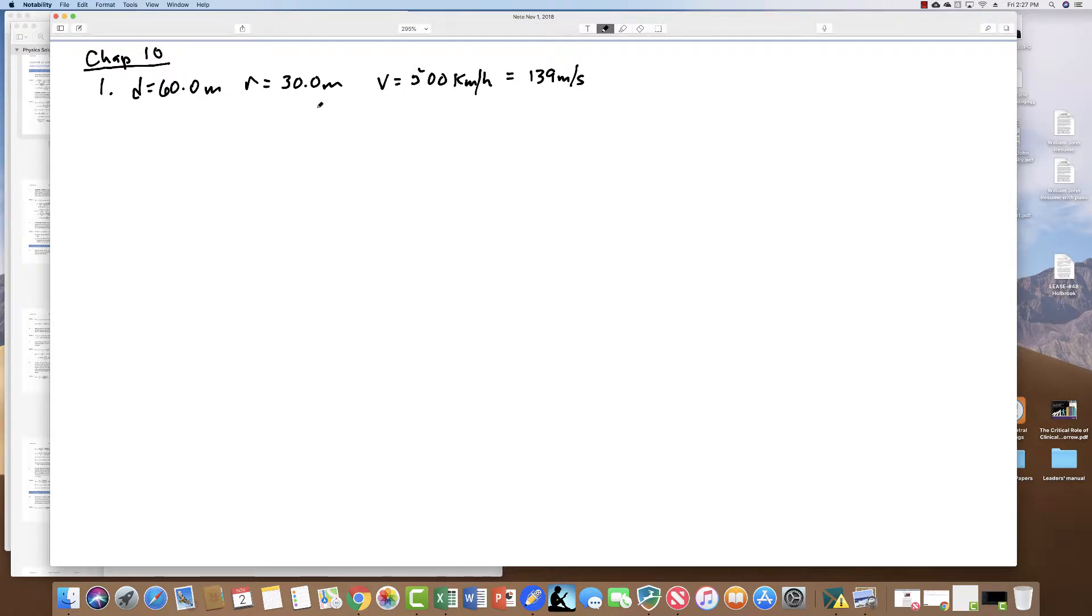That's the linear or tangential velocity. The angular velocity equals the tangential or linear velocity divided by the radius. So this is 139 meters per second divided by 30 meters, and we end up with an angular velocity of 4.63 radians per second. If we take that number and multiply by 2 pi radians per revolution, we get 29.1 revolutions per second, which is quite fast. If you multiply that by 60, you get the RPM.